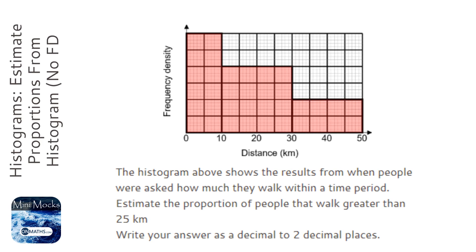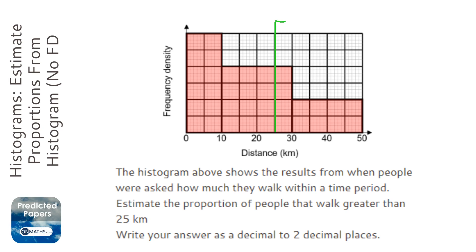For this question we're asked to work out the proportion of people that walk greater than 25 kilometers. So I'm going to draw a line up from 25 kilometers with an arrow because it's more than — greater than. To work out the proportion, we need to work out how much is to the right of that line and divide it by the total amount.